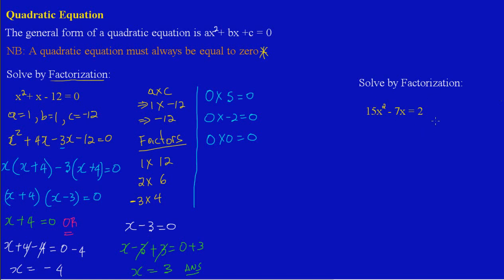Let's get into this question. We have 15x² - 7x and that is all equal to 2. Now if you note carefully, this equation is looking a bit different. You would have realized it's a quadratic because the highest power of the variable is 2. However, it is not looking like the first equation that we had worked with.